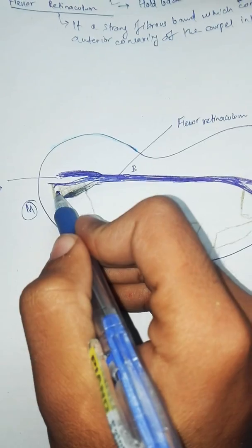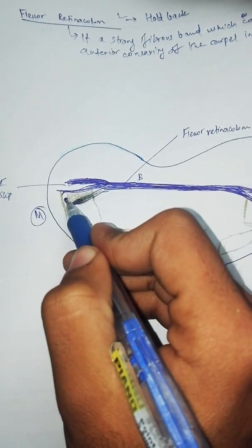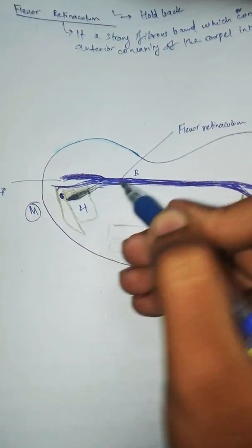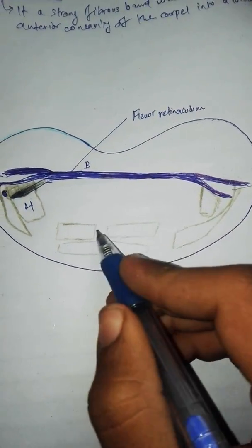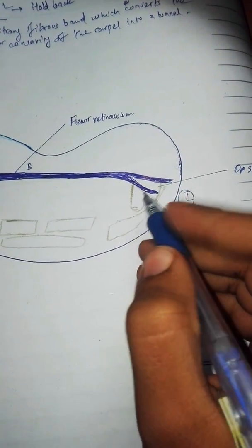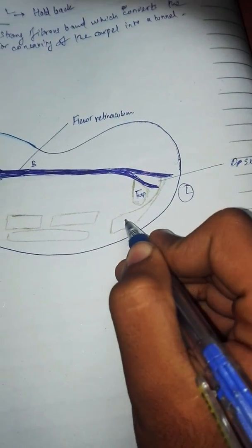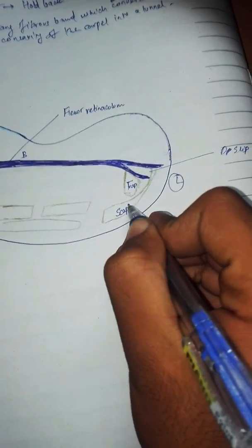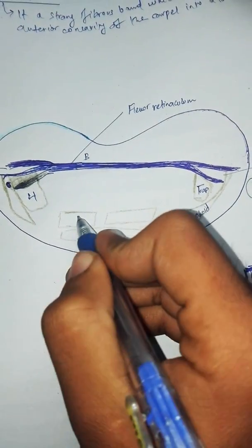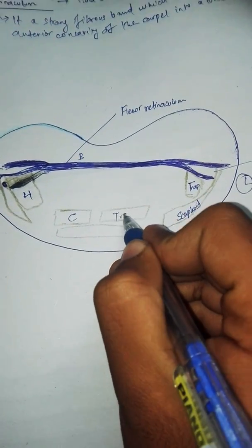The first bone on the medial side is the pisiform, then the hamate. On the lateral side, there is the trapezium and the scaphoid bone. There is also the capitate bone, the trapezoid bone.